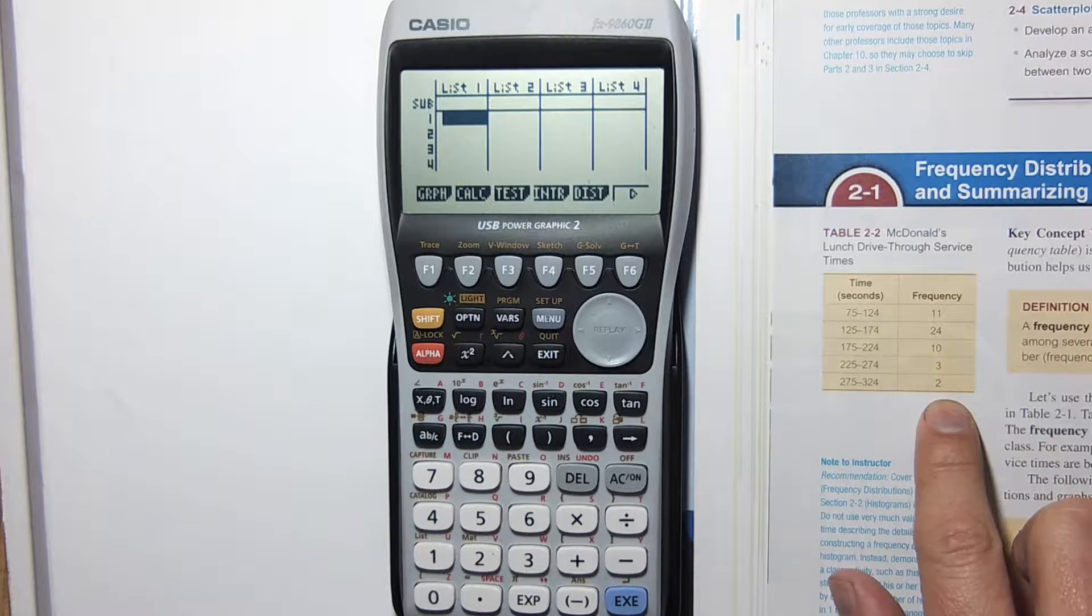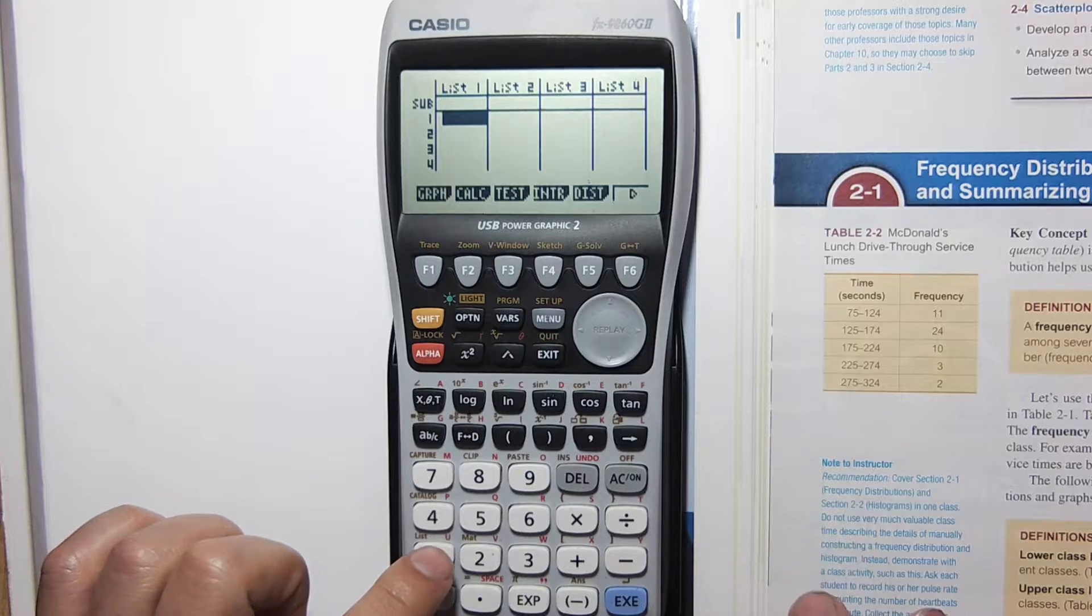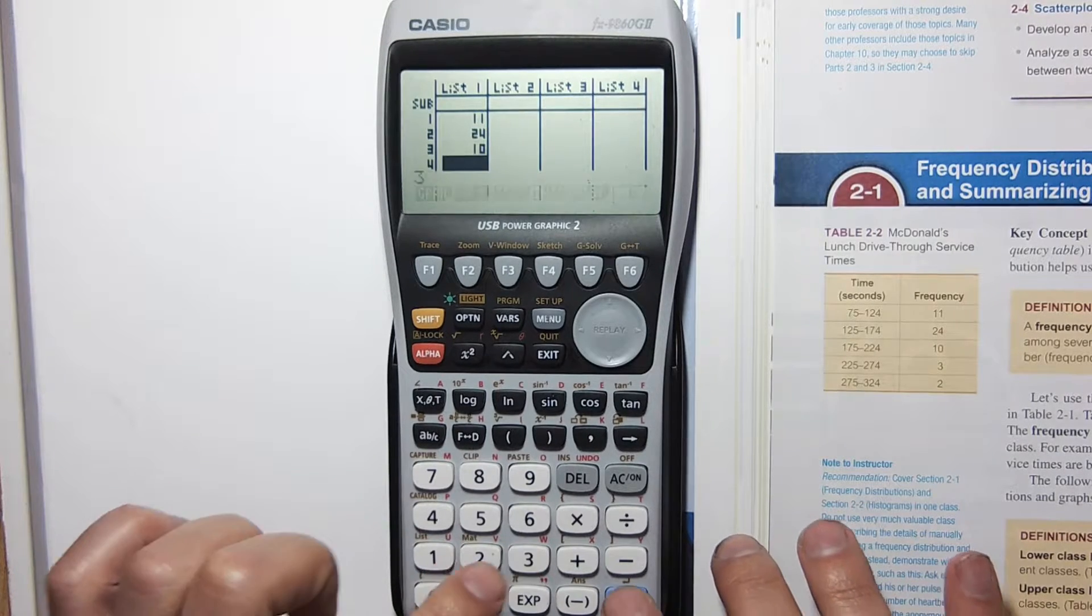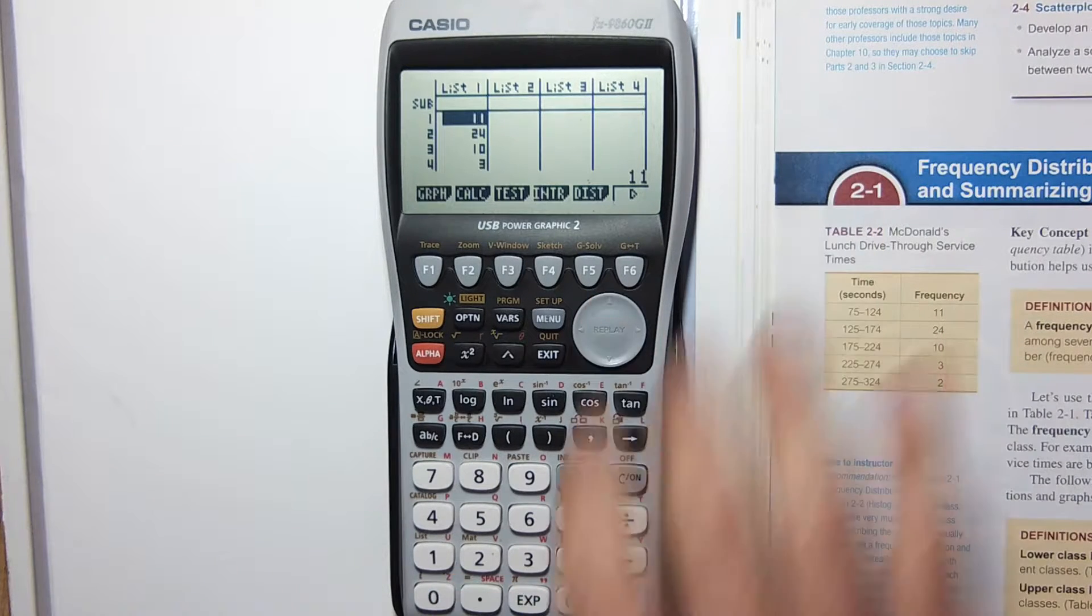I'm going to enter this frequency column from this frequency distribution table. You literally just type in the number and hit enter each time. You can see I put in five pieces of data here.